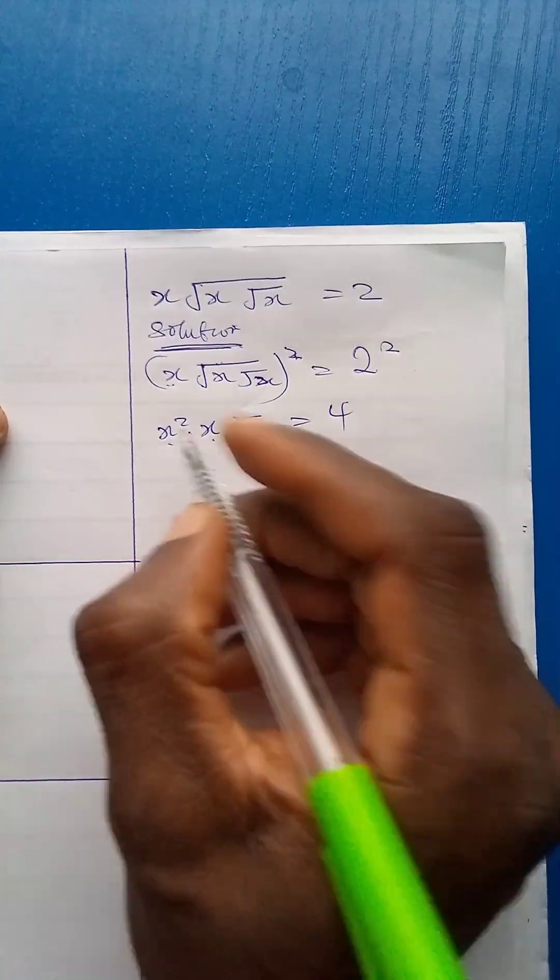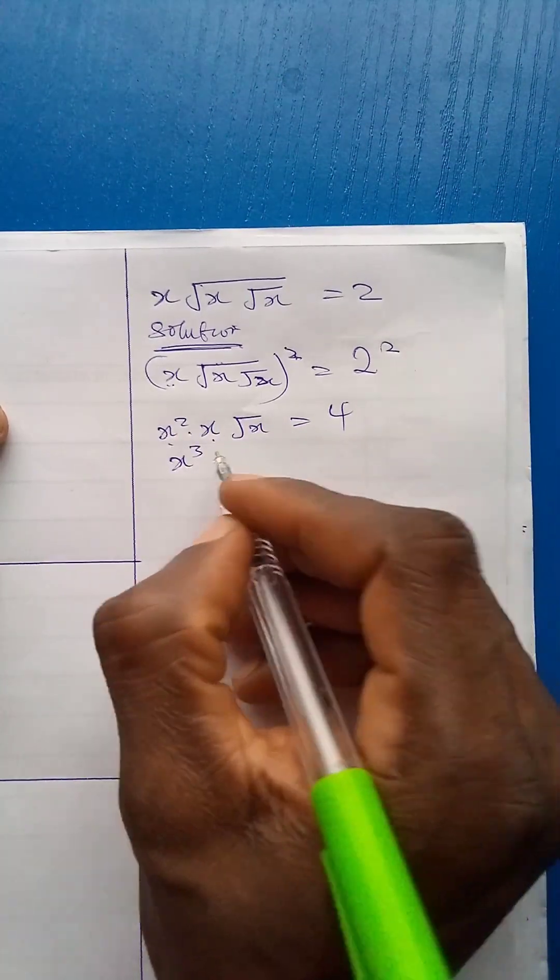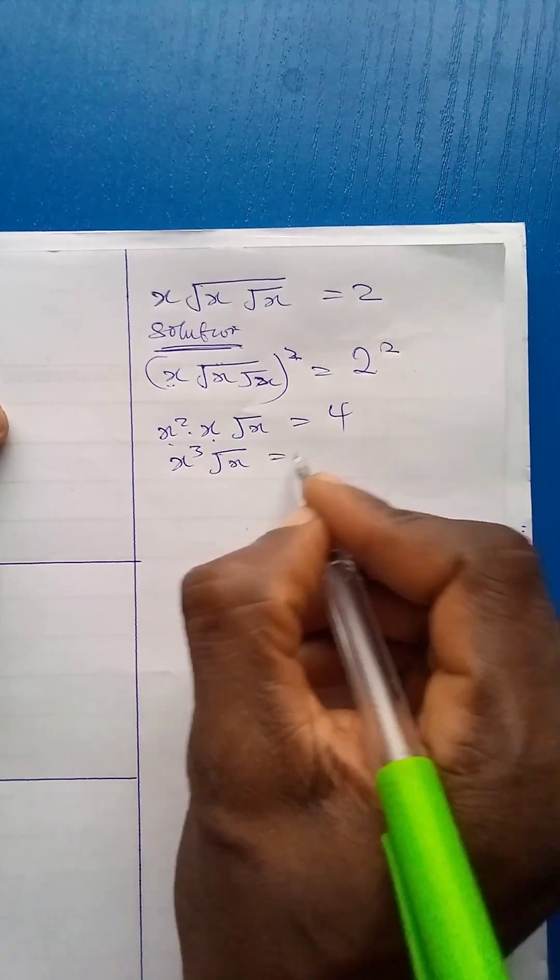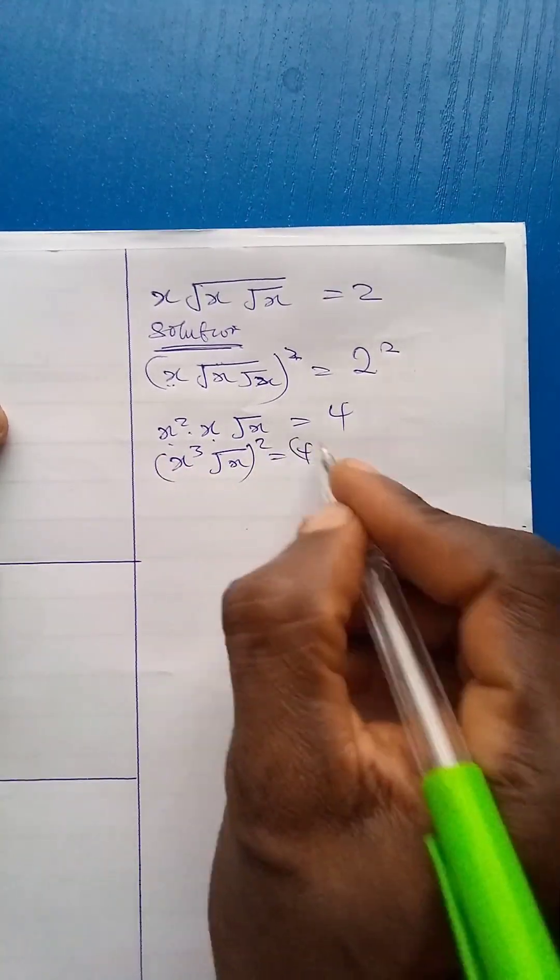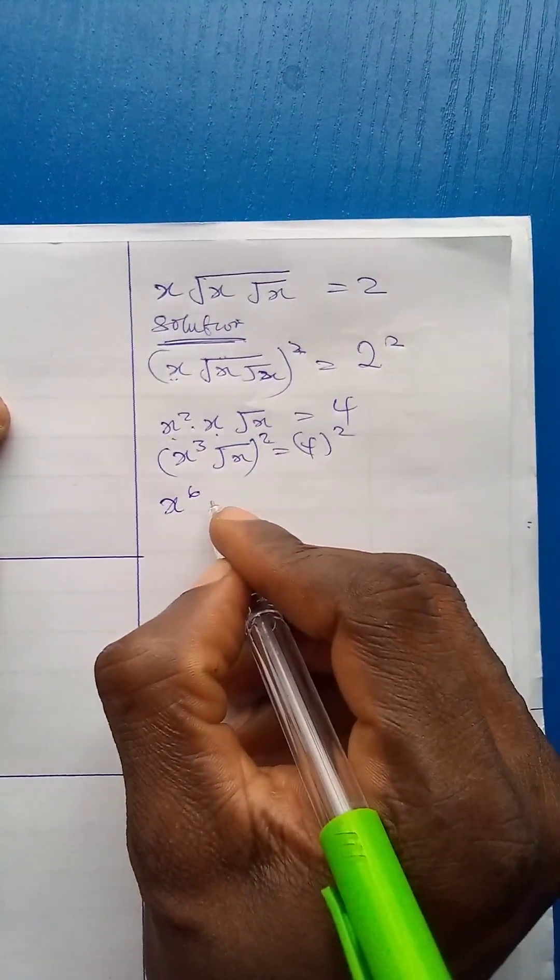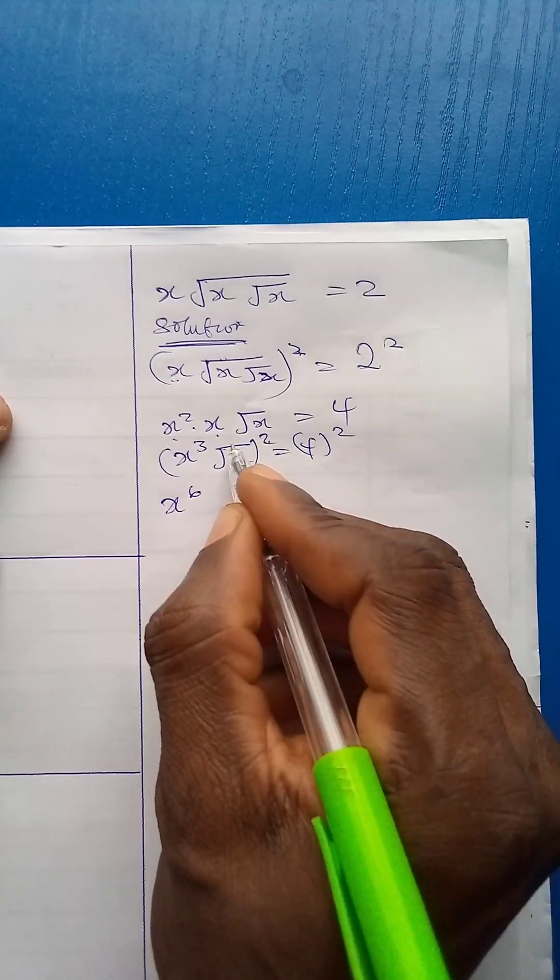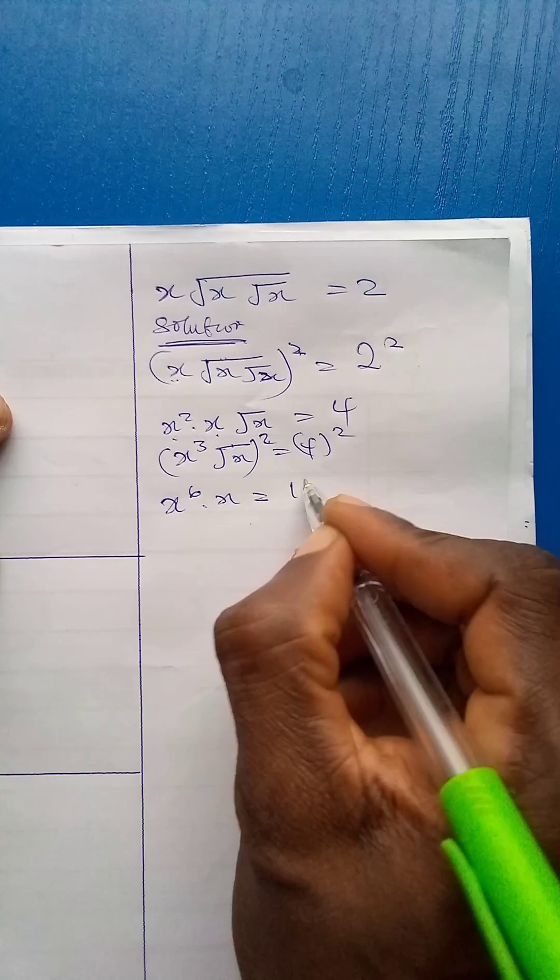Now, x squared times x will give me x raised to power 3. If I apply addition law of indices, then square root x is equal to 4. Also squaring both sides, I have x raised to power 6 because 3 times 2 is 6. Then this square will cancel this square root. I have x is equal to 4 raised to power 2 is 16.